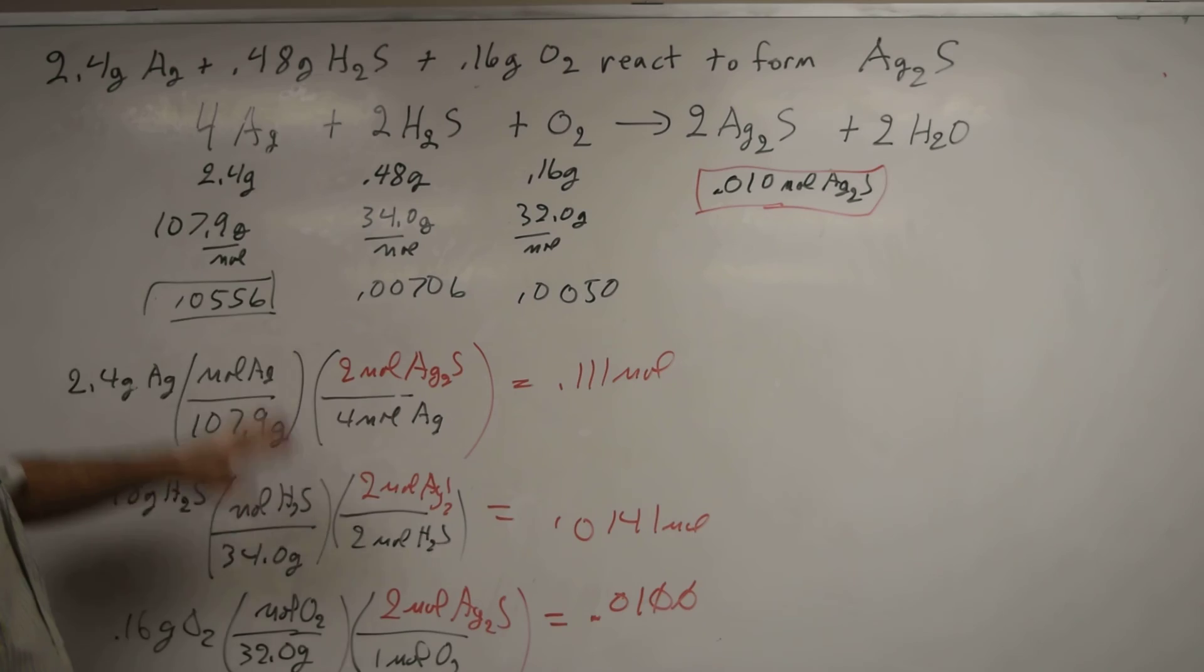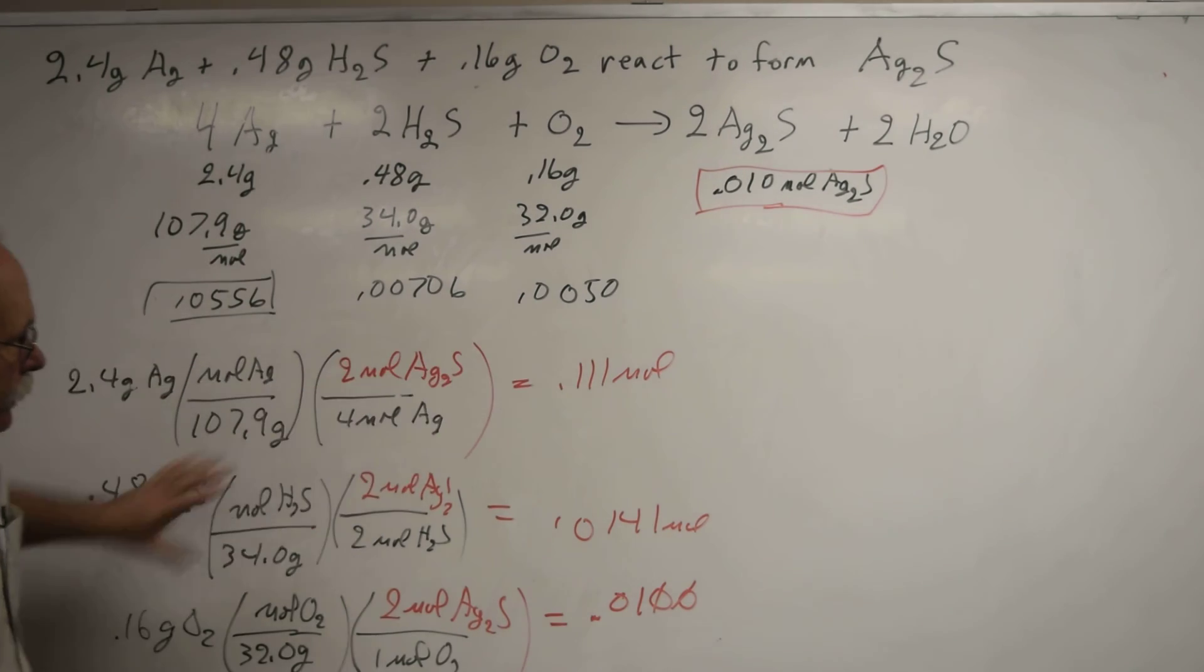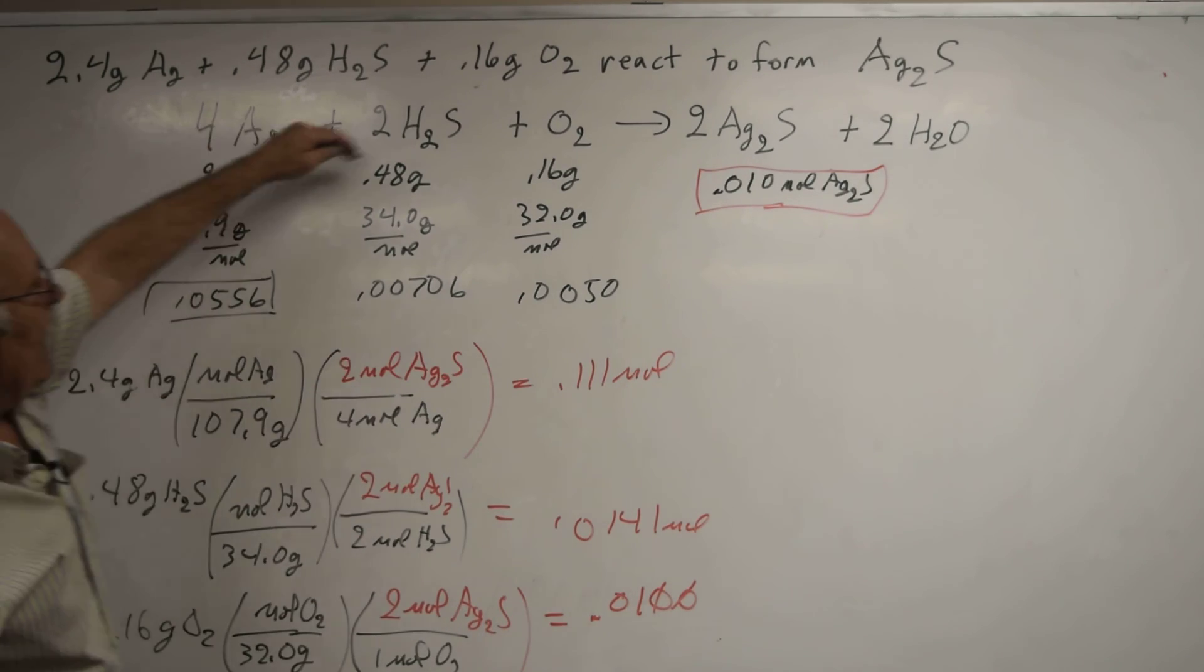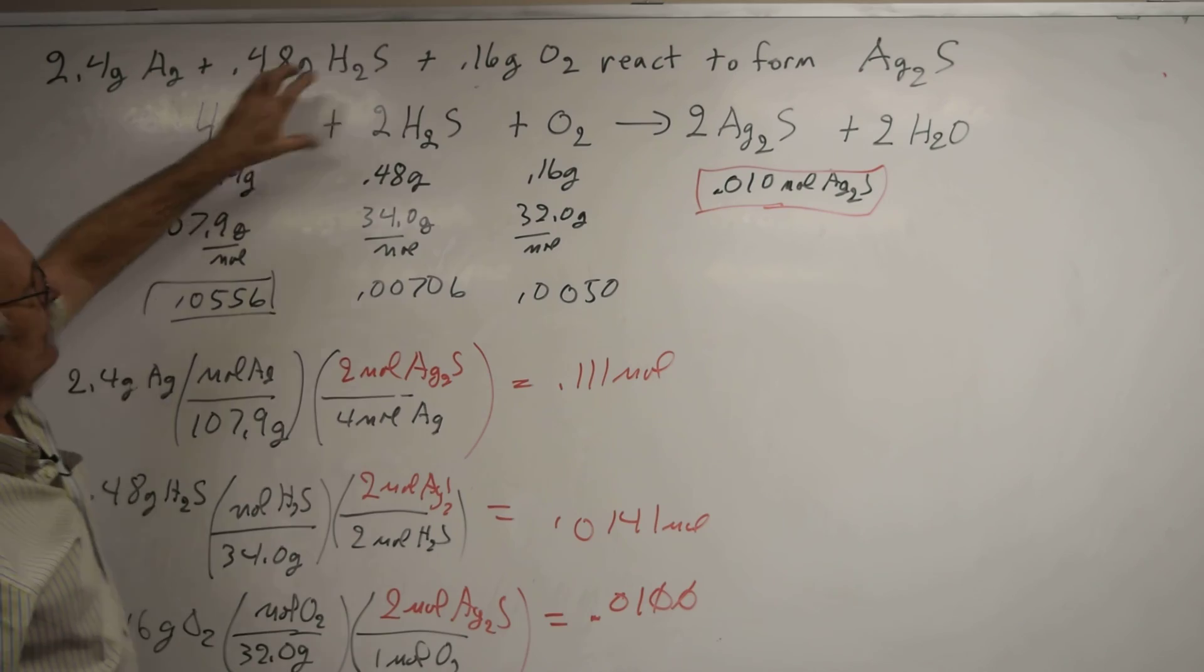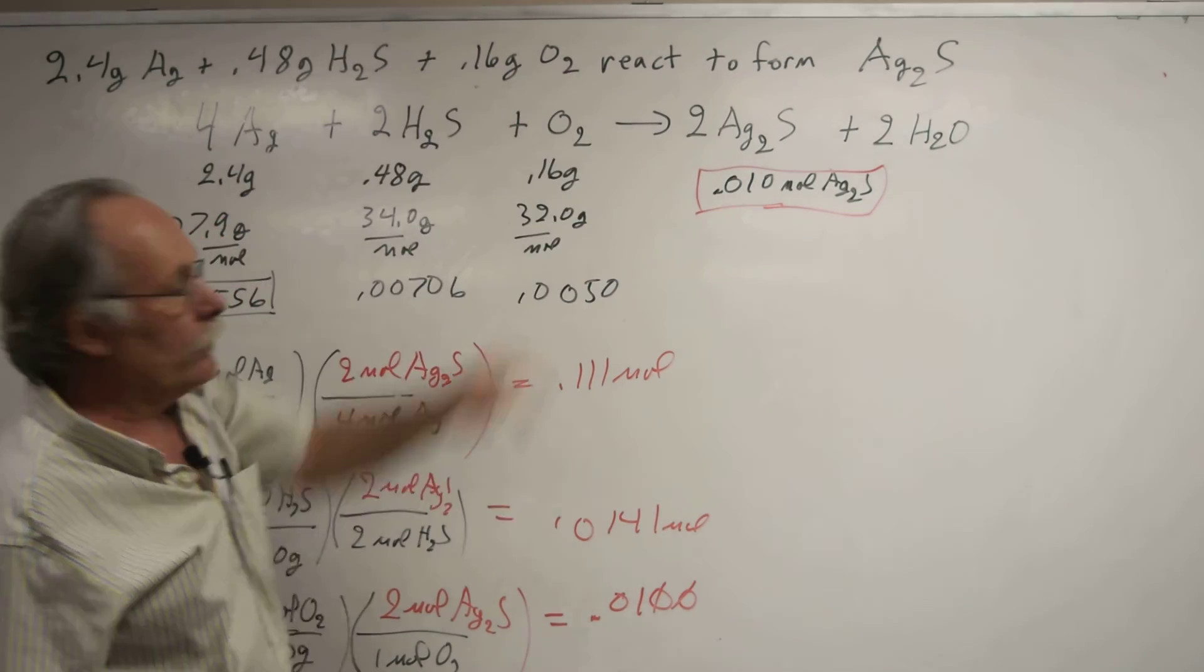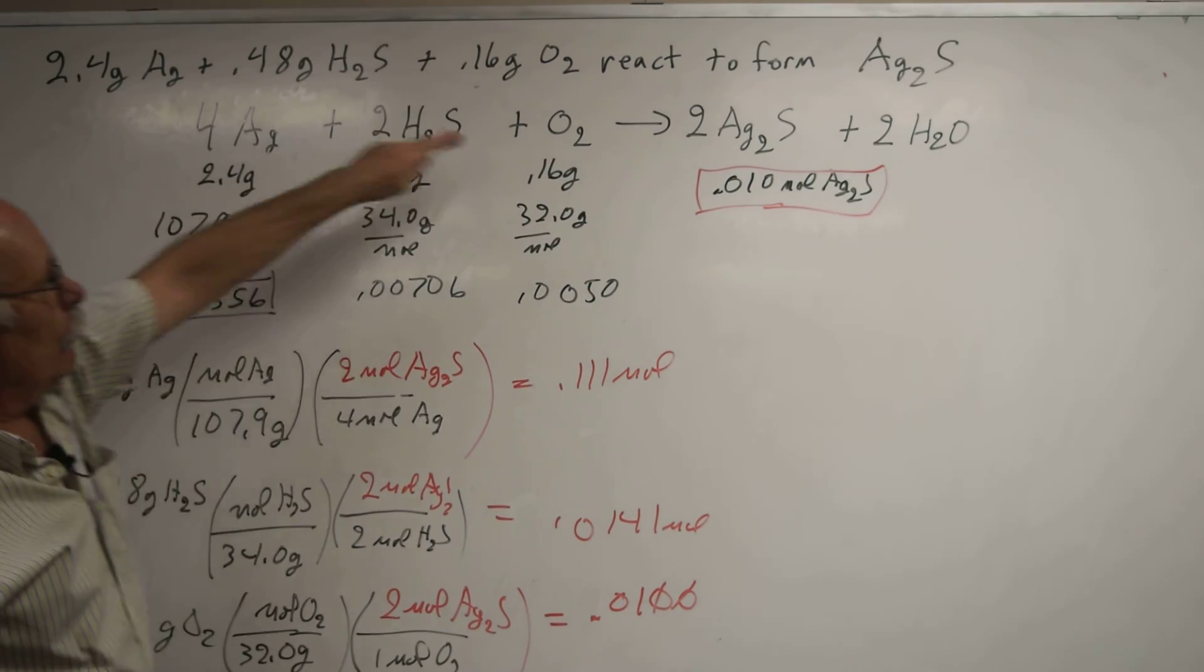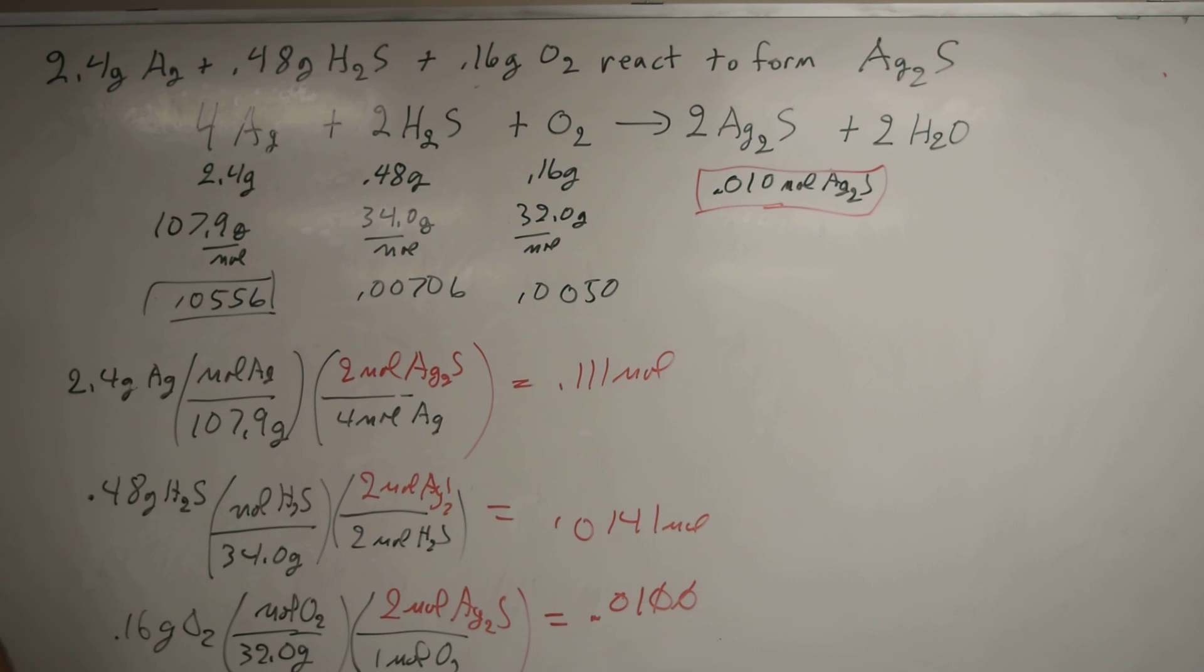So let's review this one last time quickly. You can work this out linearly, or you can write your masses, write what you need to convert them to moles, convert your masses to moles. Once you know the moles of each reactant, divide by the coefficient—the smallest number is your limiting reagent.